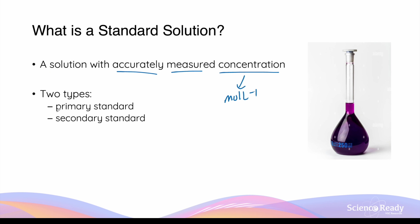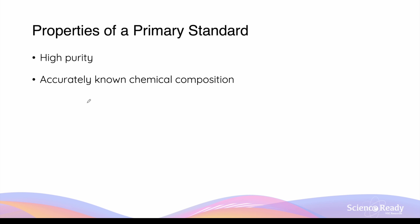This video will primarily focus on the primary standard solution. Not every chemical can be made into a primary standard solution, and there are numerous properties that make a chemical suitable to be made as a primary standard. First of all, the chemical or sample of the chemical must be of high purity and have an accurately known chemical composition.